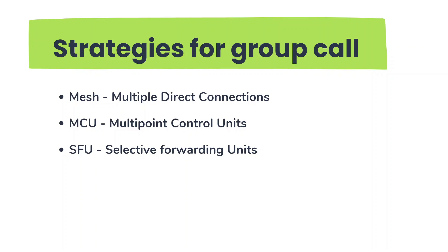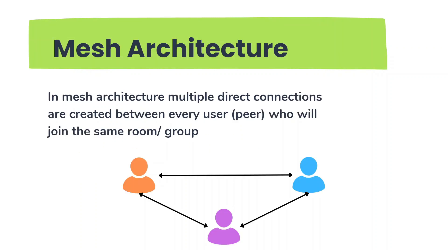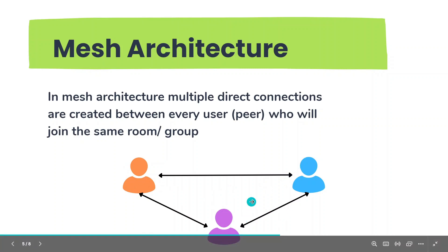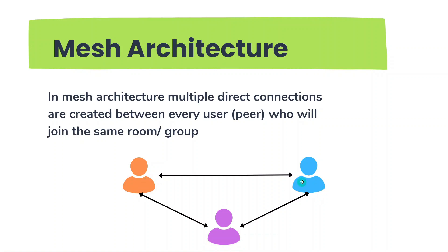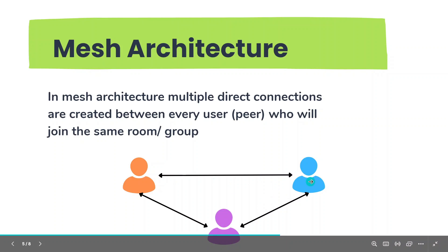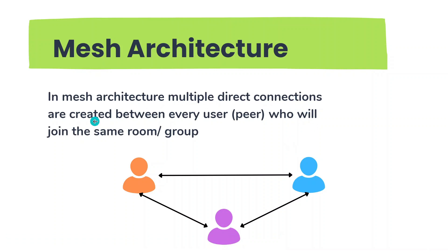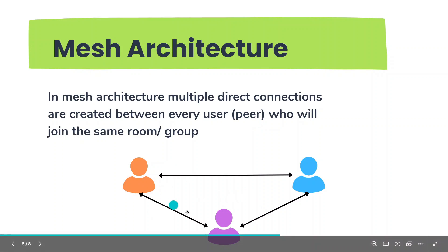Let's visualize it. We have three users — one, two, and three. In a mesh architecture, user one is connected directly to user two and user three, and the same is the case for the other two users. In mesh architecture, there are multiple direct connections between every user.